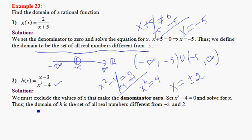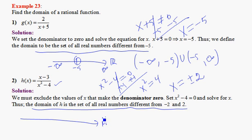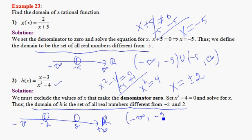So the domain of h is the set of all real numbers different from -2 and 2. Looking at the real number line, we plot both points, cut them off, and whatever is remaining is the domain.